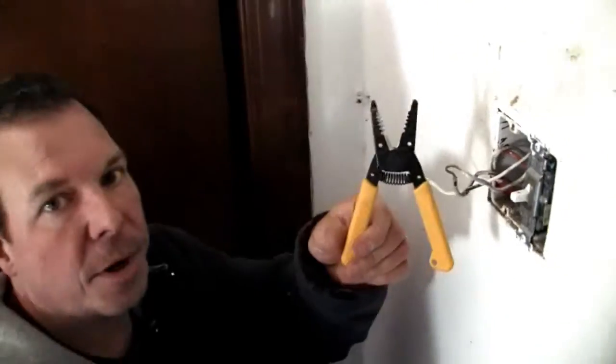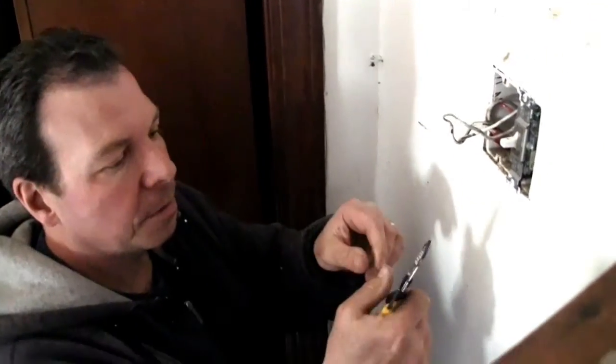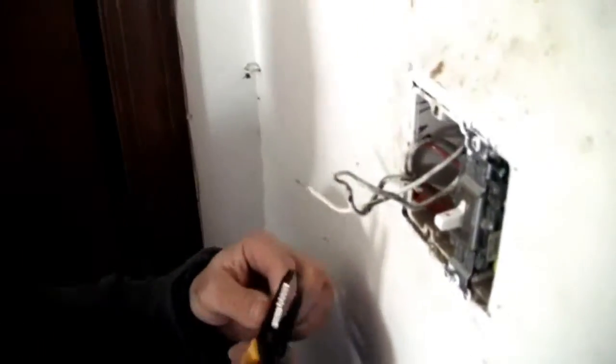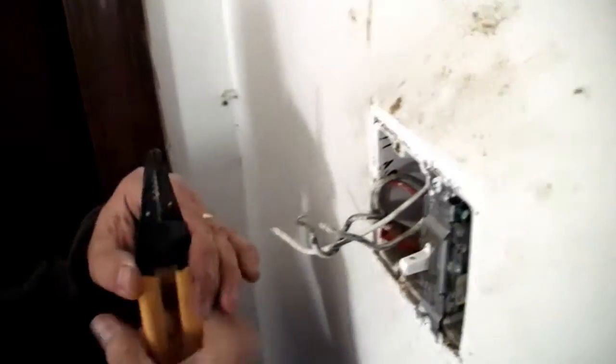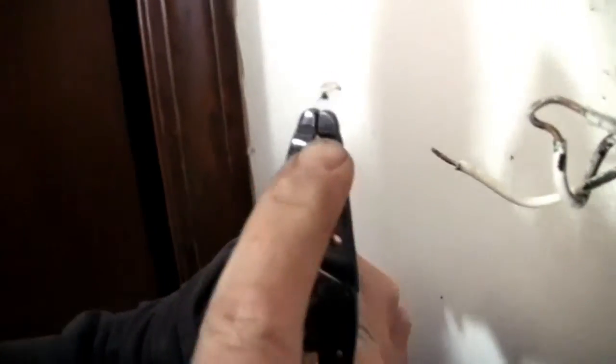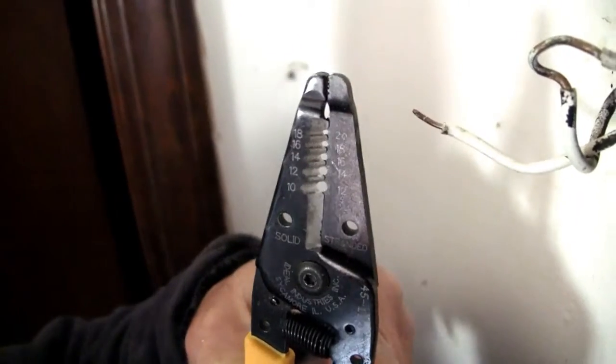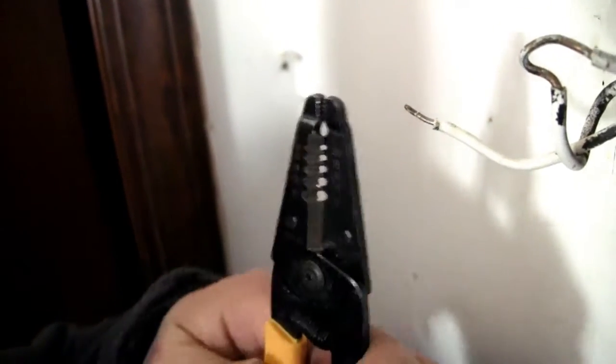This is a wire cutter and a wire stripper. They sell them at all the hardware stores. Basically, you have to try to find, if you close it up, you can see that there's different size holes depending on the size wire you've got. So you've got to figure out which one you've got.